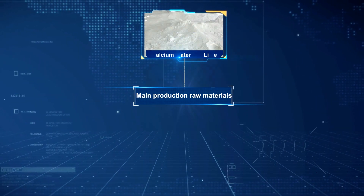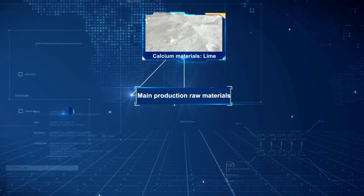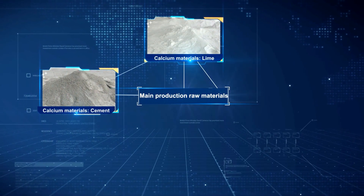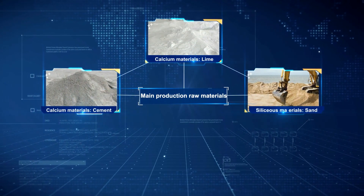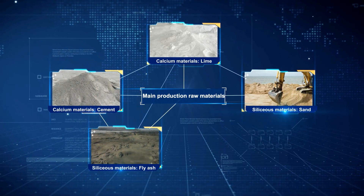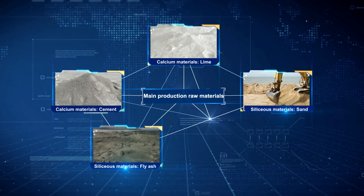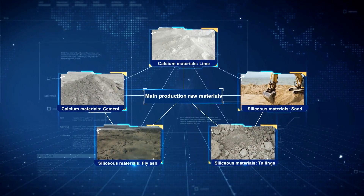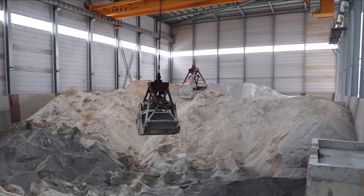The raw materials for AAC production are lime and cement containing calcium, and materials rich in silica, such as sand, fly ash or tailings, etc.